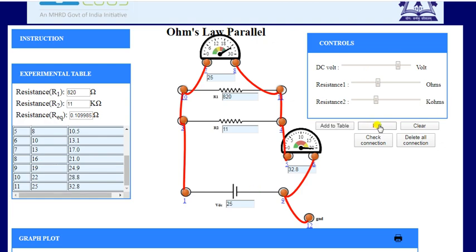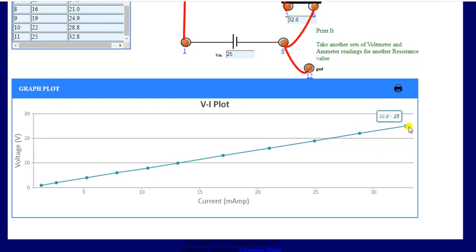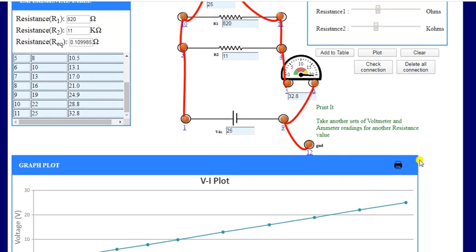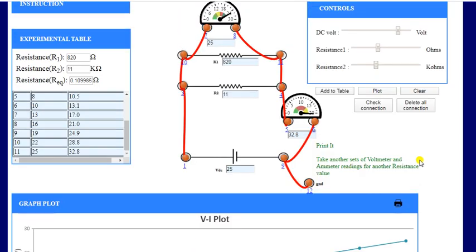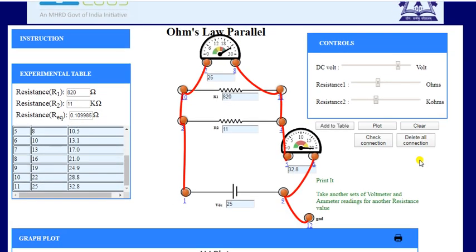So we will click on plot, and a graph between voltage and current. This graph shows that there is a linear relationship between voltage and current for the resistors R1 and R2 that are connected in parallel. So it shows that Ohm's law verifies for the resistances that are connected in parallel. Thank you.